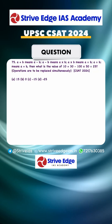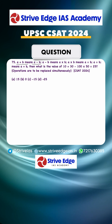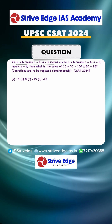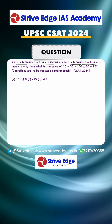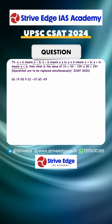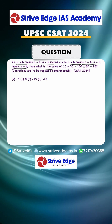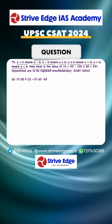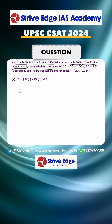Dear student, this is a good question asked in CSR 2024. The rules are: a plus b means a minus b, a minus b means a into b, a into b means a divided by b, and a divided by b means a plus b. The question is: what is the value of 10 plus 30 minus 100 into 50 divided by 25?